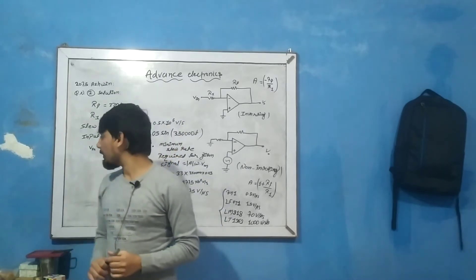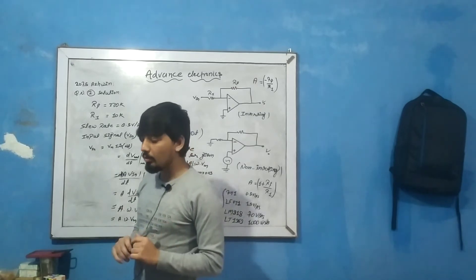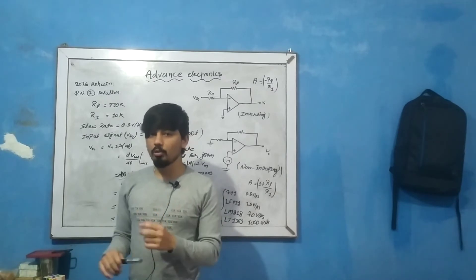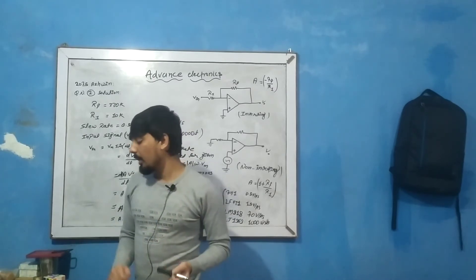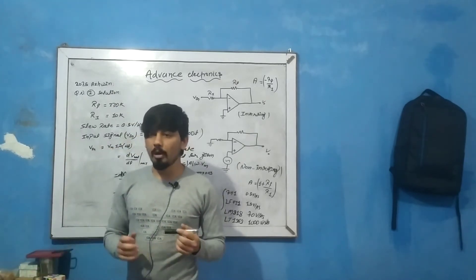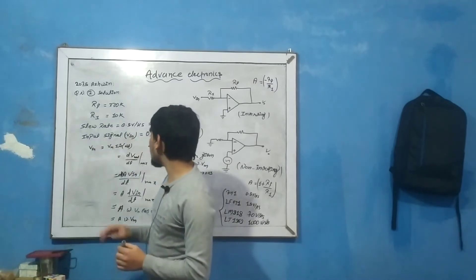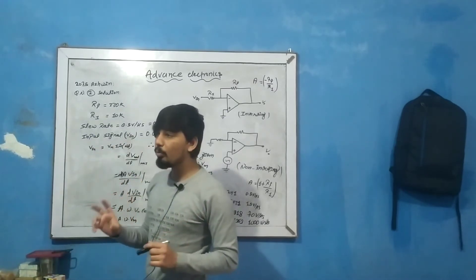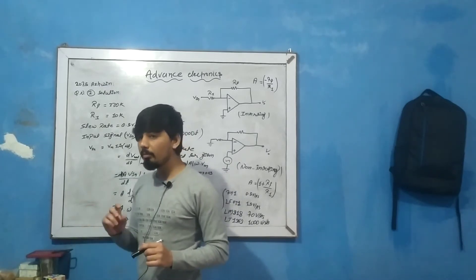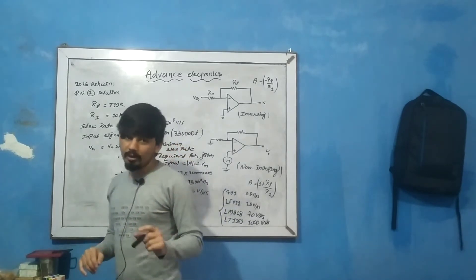We need to find the minimum slew rate required so that the signal is produced without distortion. If the op-amp's slew rate is too low, the output signal will be distorted. So we will calculate the minimum slew rate required for this signal without distortion.